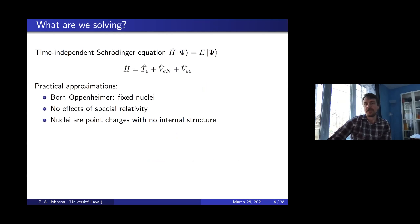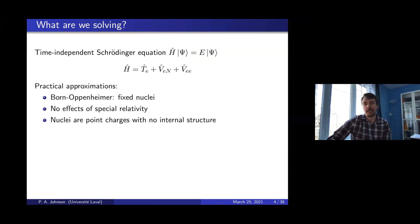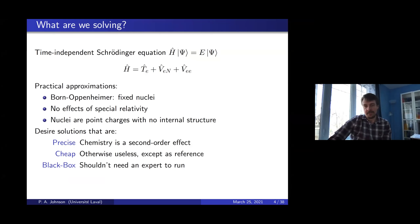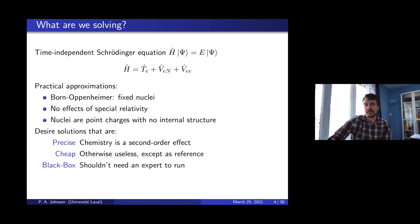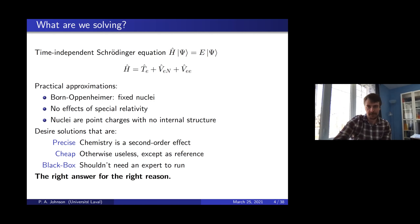What we are solving is the time-independent Schrödinger equation. The Hamiltonian H takes into account all contributions to the energy: the kinetic energy of the electrons, the interaction of electrons with the nuclei, and the inter-electronic repulsion. There are a lot of practical approximations already baked in: the nuclei do not move, there's no relativity, and the nuclei are treated as just point charges. Even with these reasonable approximations we have a tremendous difficulty. We want solutions that are precise enough to get correct results, cheap enough to do calculations for big systems, usable by anyone, and — most importantly — we want to get the right answer for the right reason.